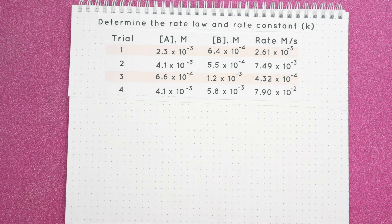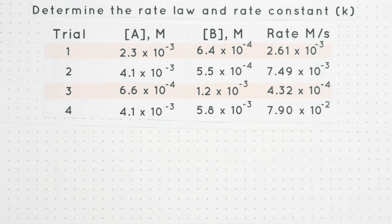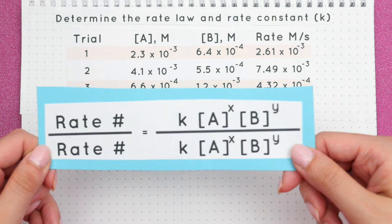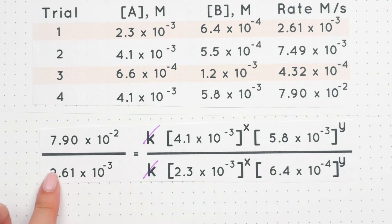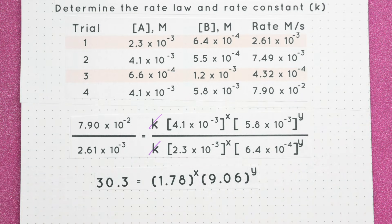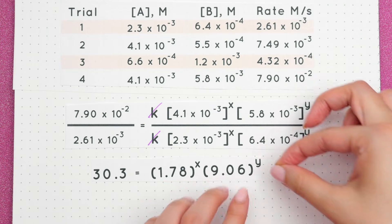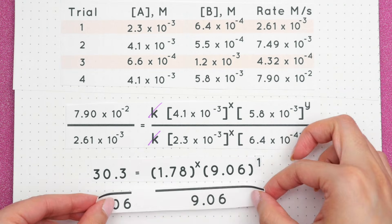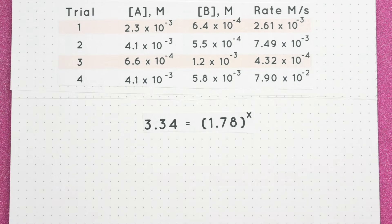Now let's solve for x. Since there are no other trials that have the same values, it doesn't matter which trial we pick. So I'm going to pick trials 4 and 1 and plug everything into the formula. We can cancel out the k's and divide the left and right sides to get this new equation. Since we found y was equal to 1 previously, we can replace y with 1 and divide both sides by 9.06 to get this new equation.